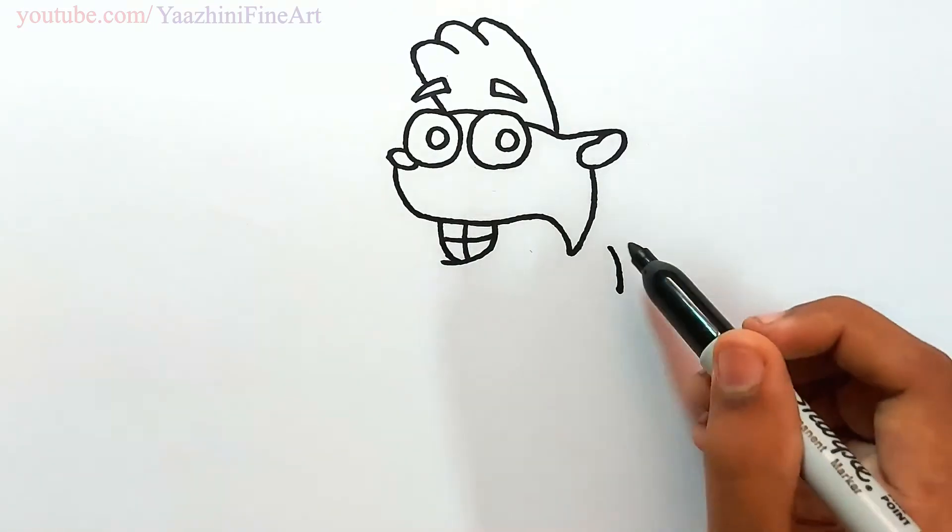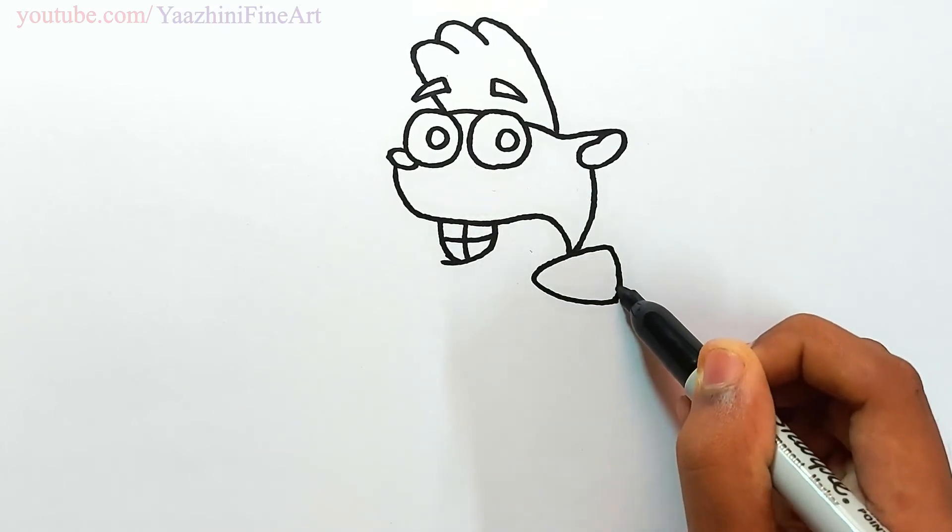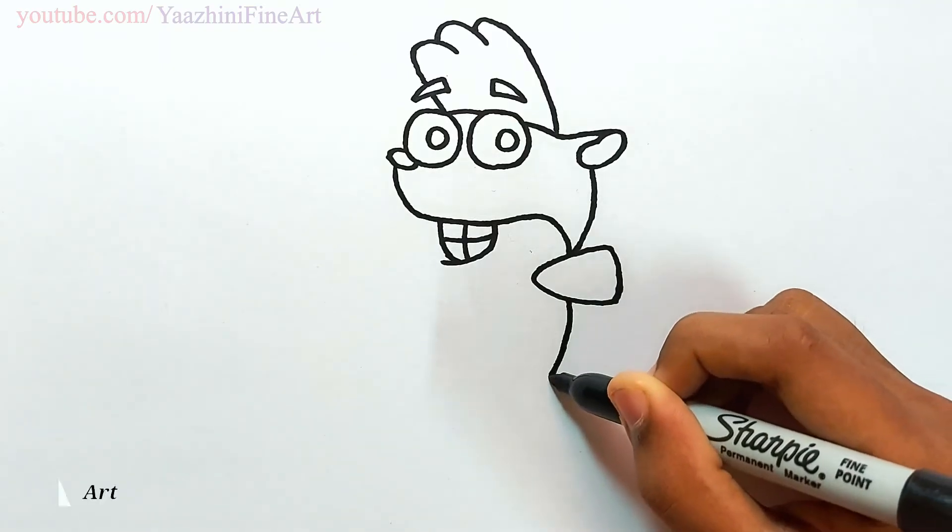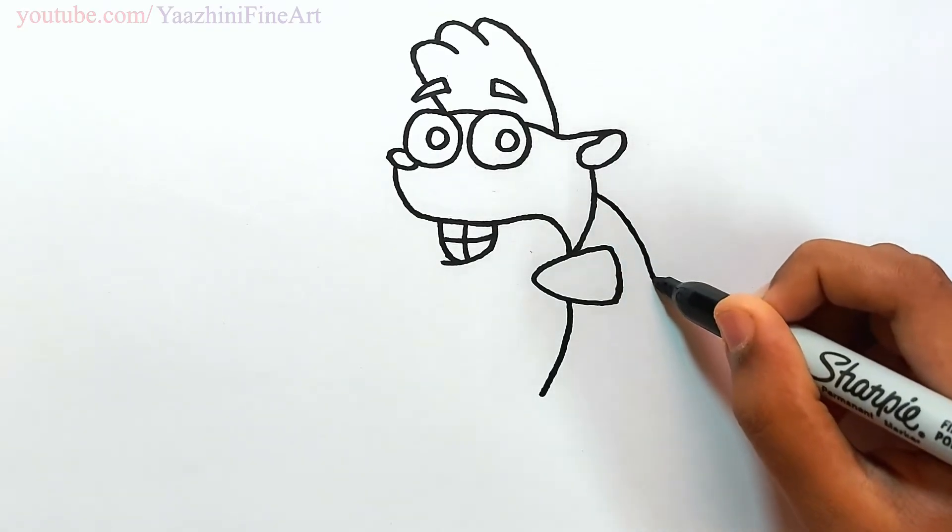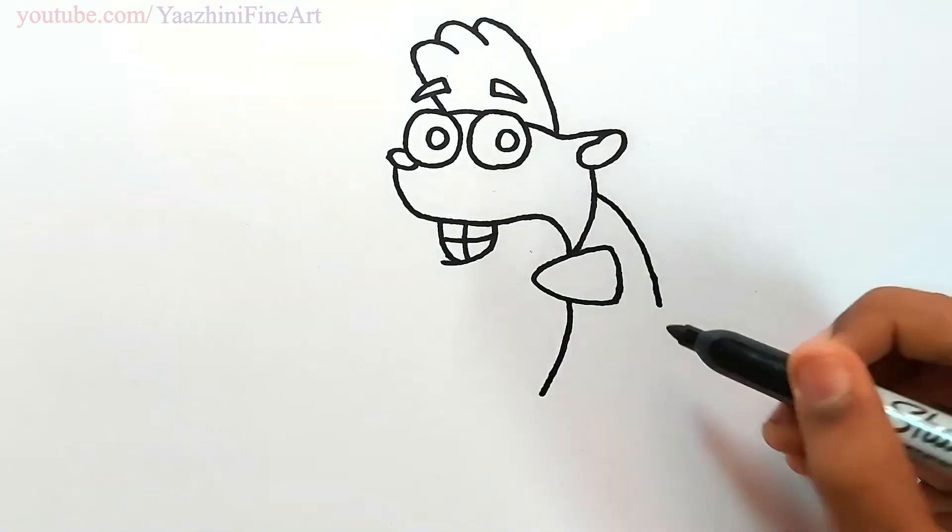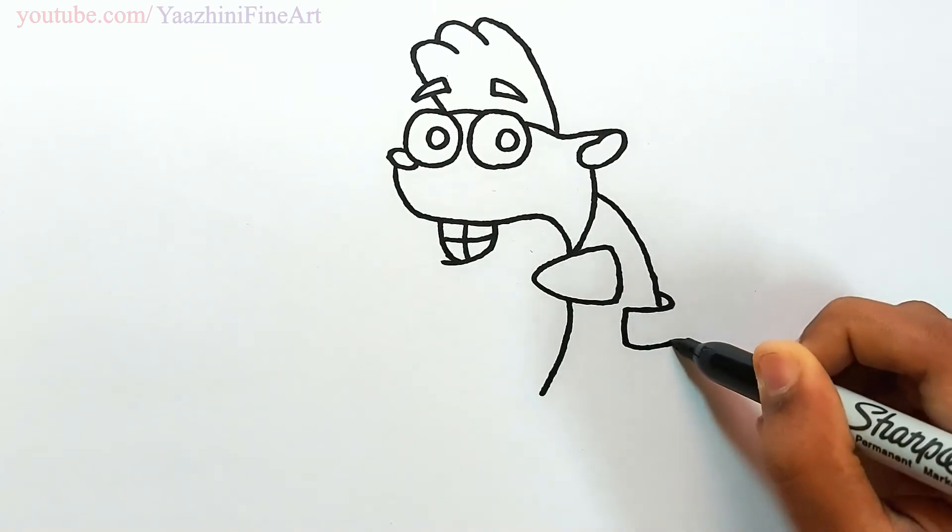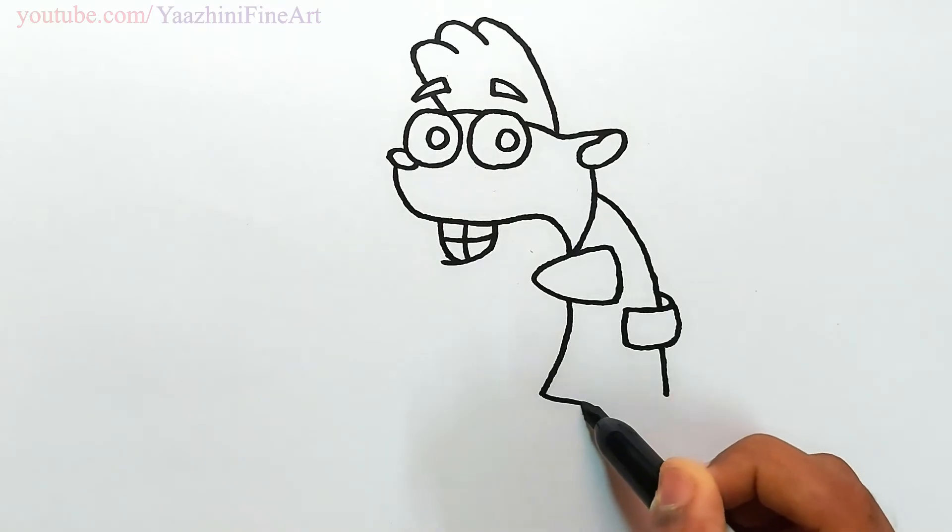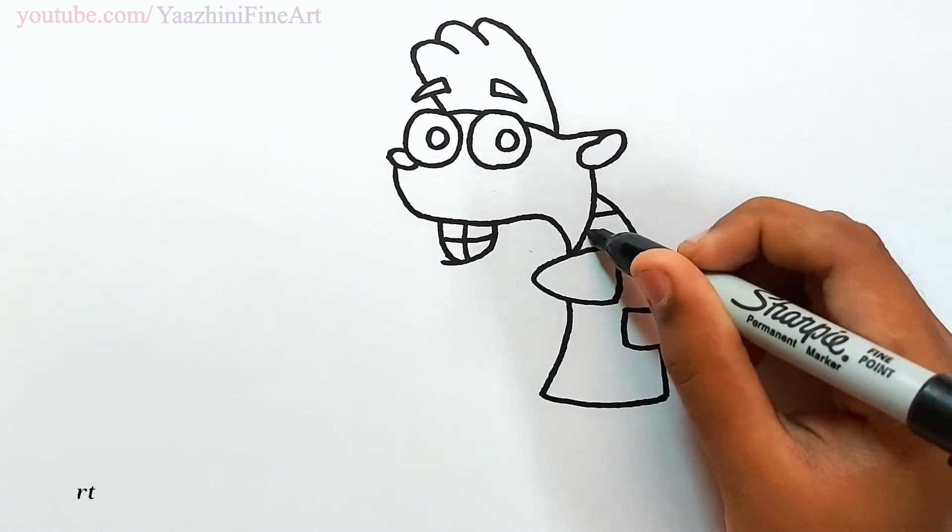Draw his hand. Draw his shirt from here. Draw a line from there. Draw his pocket. Continue to draw his shirt. Join it off. Draw some lines inside.